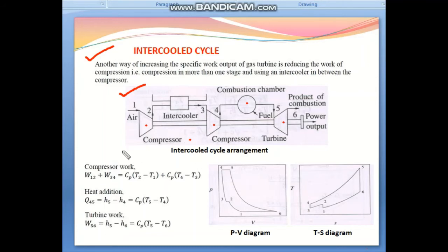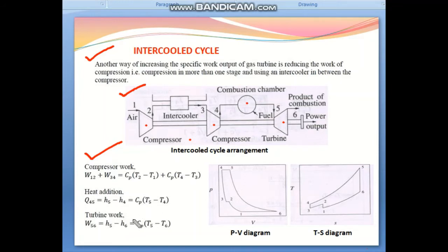Now let's see the different work quantities. The compression work covers processes 1-to-2 and 3-to-4: W = Cp(T2 − T1) + Cp(T4 − T3). Heat addition in the combustion chamber (process 4-to-5): Q₄₅ = Cp(T5 − T4). Turbine work (process 5-to-6): W_turbine = Cp(T5 − T6).